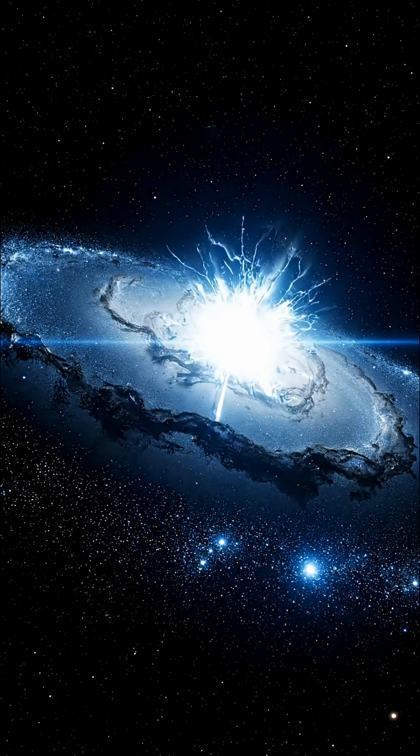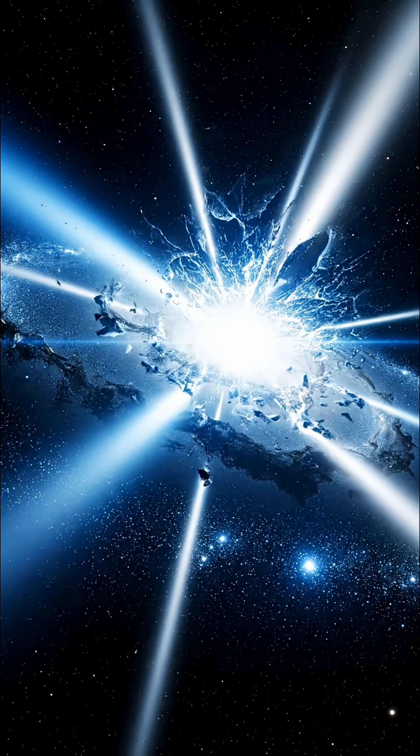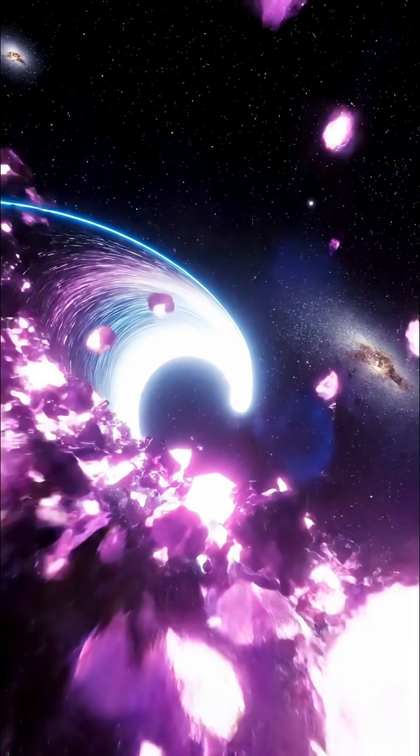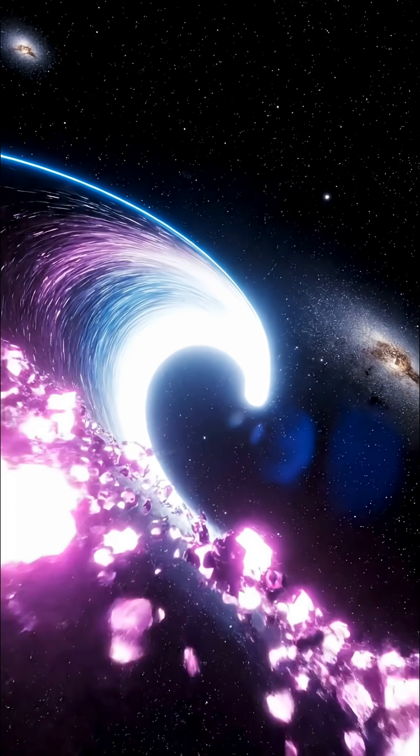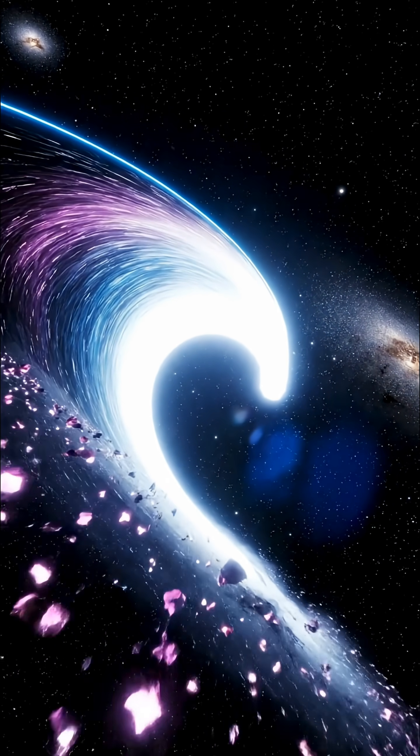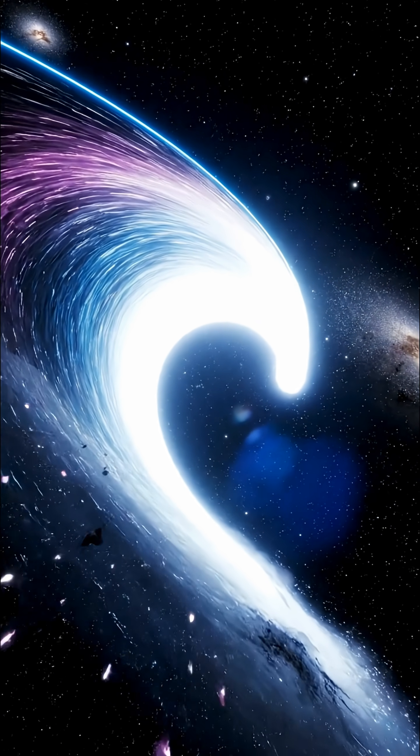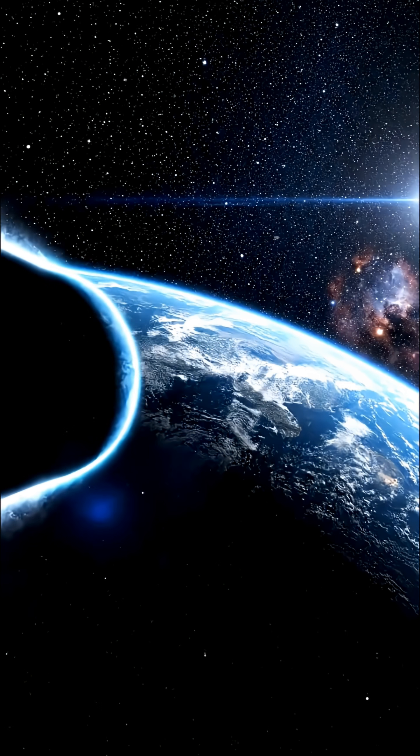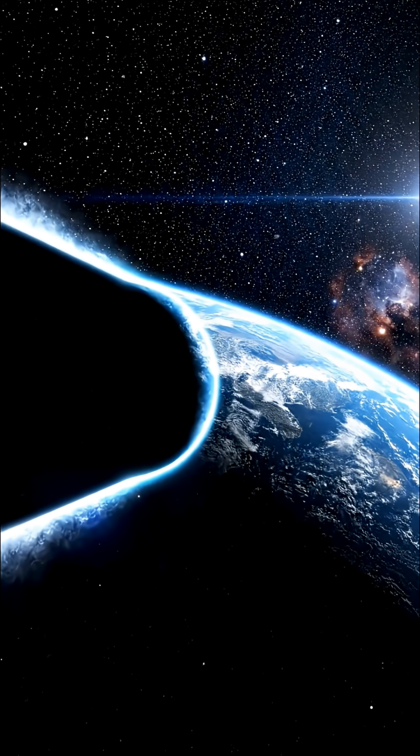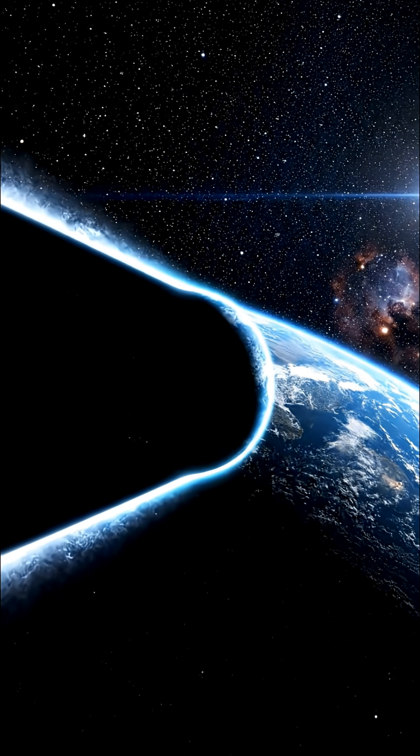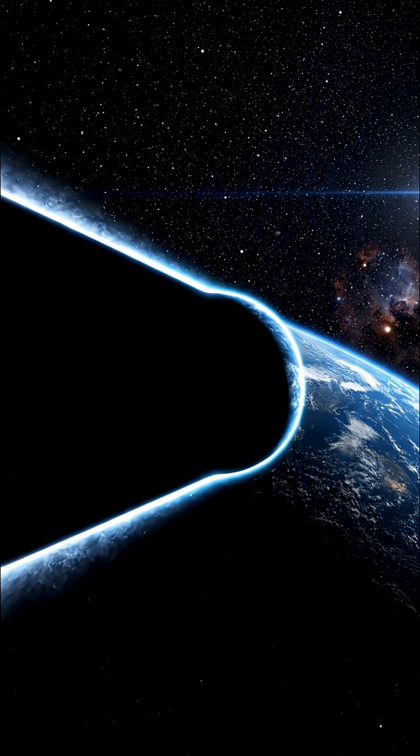Number 1: False vacuum decay. According to quantum physics, our universe may exist in a fragile state. If a more stable vacuum formed somewhere in space, it would expand outward at the speed of light, rewriting the laws of physics as it went. There would be no flash, no explosion, no time to react. Earth and everything else would simply cease to exist.